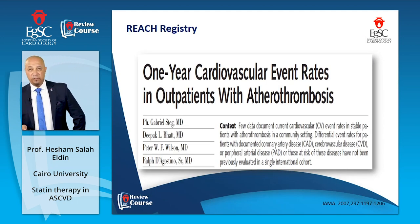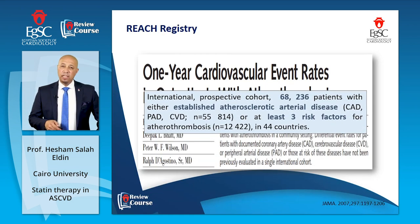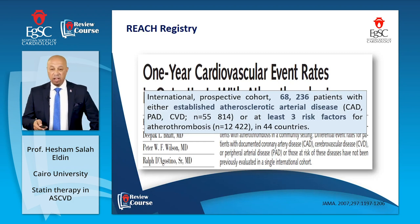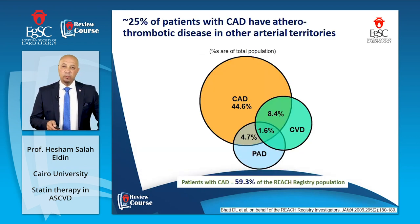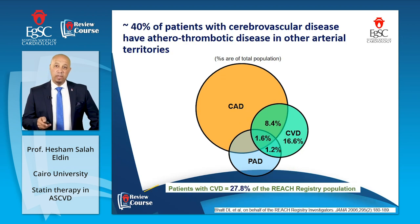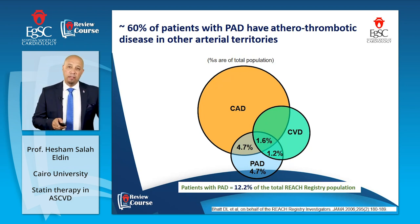The REACH registry was one of the largest ever done registries on atherothrombosis. It involved almost 68,000 patients who had either coronary artery disease, peripheral vascular disease, or at least three risk factors, spanning 44 countries. The data were clear: 25% of patients with coronary artery disease have atherothrombotic disease in other arterial territories, almost 40% with cerebrovascular disease have atherothrombosis elsewhere, and 60% of patients with peripheral arterial disease have atherothrombotic disorders in other arterial territories.